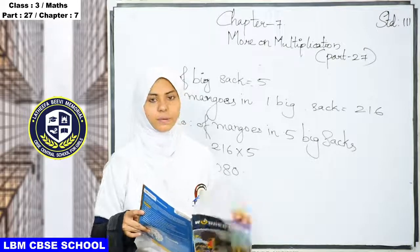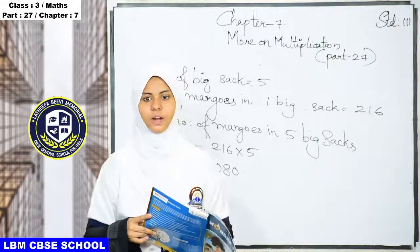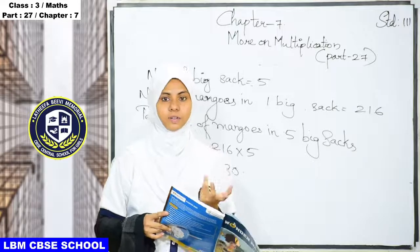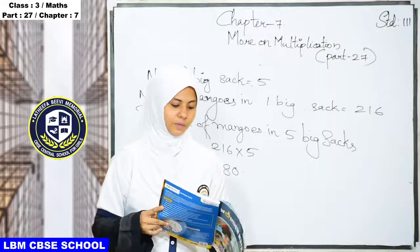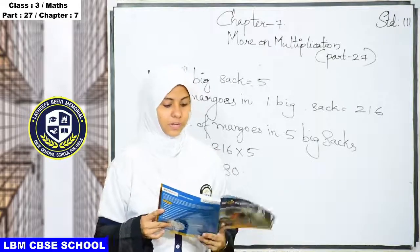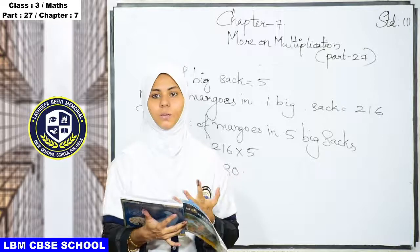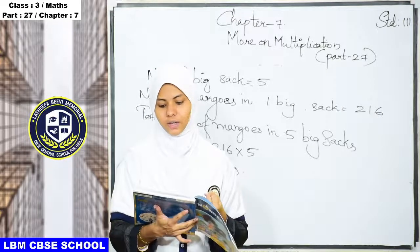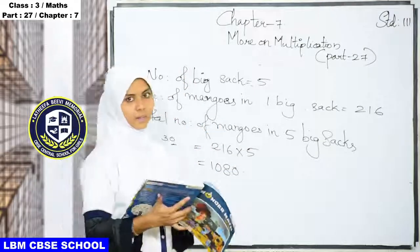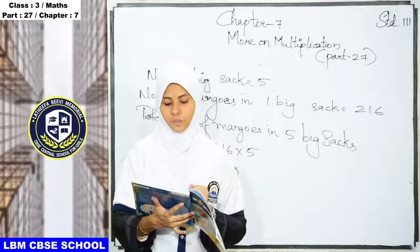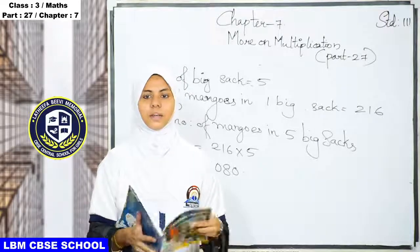By the end of this chapter, we also have to learn multiplication tables from 1 to 15 by heart. Today we studied how to multiply a 3-digit number by a 1-digit number. We have some exercise problems — exercise 7.1 — which we will start in the next class. Today's class ends here.